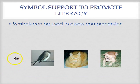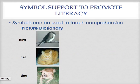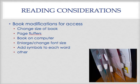Symbols can be used to assess comprehension — for example, the student matches the word 'cat' to a picture of a cat. Symbols can also be used to teach comprehension through a picture dictionary: if a student sees the word 'bird' and is unclear on its meaning, they look it up in the picture dictionary, see the picture, and can now match the picture to the word.